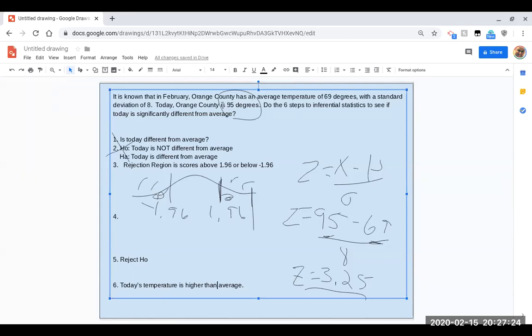So you can see how all these steps really remain the same. But when the number changed, it changed what happened after we did the math. So steps one, two, and three stayed the same. But when we did the math, it changed our decision about the null and our conclusion. So now we'll practice some other iterations of something similar.